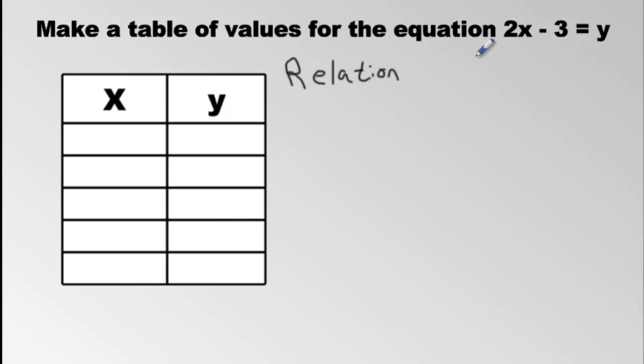Here the question states to make a table of values of this equation: 2x minus 3 equals y. The first thing I recommend you do is fill up this side over here, because there's no numbers. If there were numbers, it wouldn't be too bad, but there's no numbers, so let's not panic, let's just put some numbers in, and it doesn't even matter what you put in. I'm going to start simple though. I'm going to put a 0, 1, 2, 3, 4. Those are simple numbers to use.